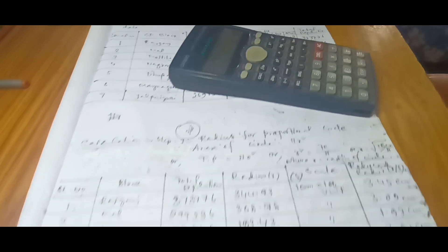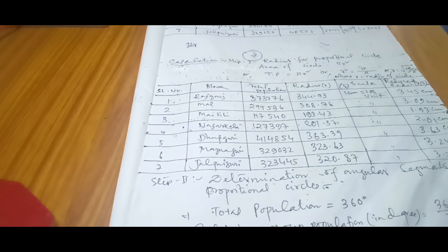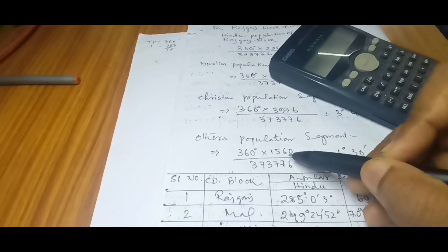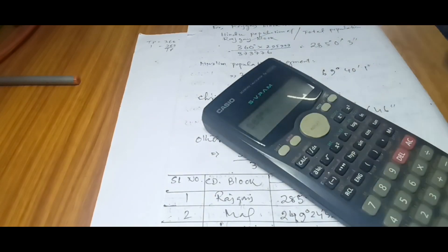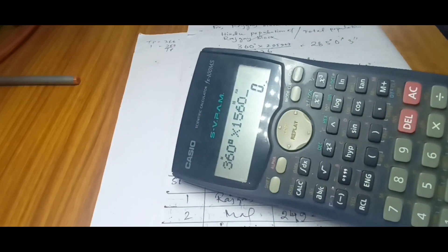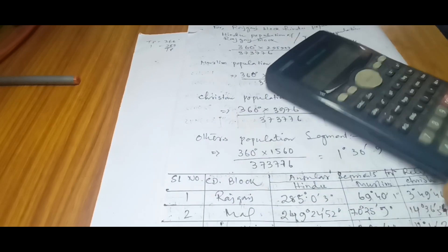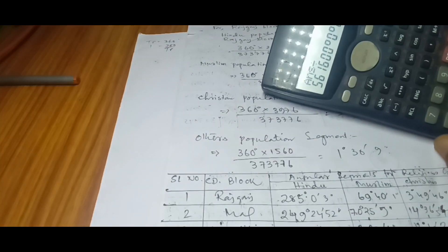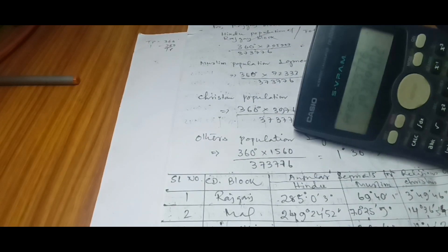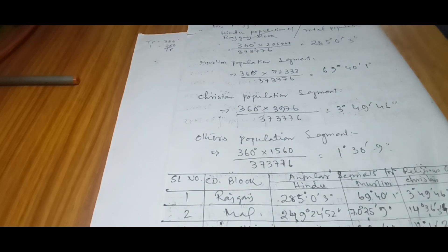Similarly, to avoid syntax error for the degree section, let me show you how to go. Simply go part by part. Write 360 degrees multiplied by, for example, 1,516. Press equal to. Don't go with more operations, simplify it. After that you are getting a degree. Now this degree should be divided by the total population, 373,776. Now I am getting 1° 30' 9". So this is the way you have to calculate.